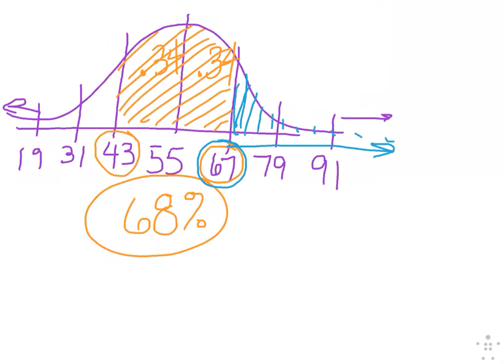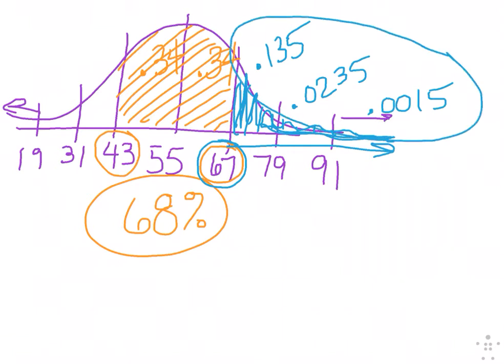So you want everything that I'm shading in blue. Which again, this number was 0.135. This number was 0.0235. And this number was 0.0015. What do you do with those three numbers? Add them. Wait, why are you adding? You're going with the blue. Wait, couldn't you just go 0.5 minus 0.34? You got ahead of me. But yes. So if you want to add those three together, you should get what? 0.16. That's what you get when you add them.